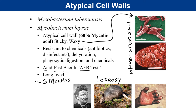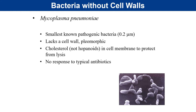Tuberculosis can spread outside the lungs through the blood and disseminate to various organs, especially in immunocompromised individuals such as those with HIV, AIDS, or on immunosuppressive drugs. TB can range from asymptomatic cases in most infected people to patients coughing up blood and having disseminated tuberculosis.